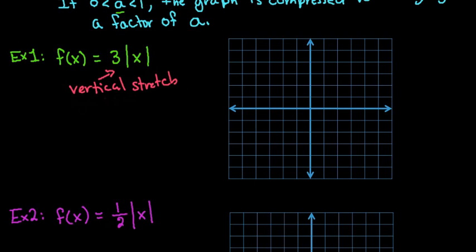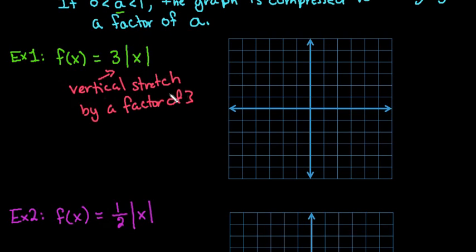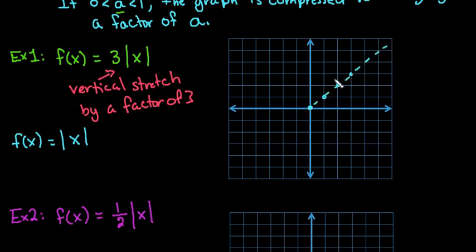This is going to be a stretch by a factor of 3, so our output is essentially going to be multiplied by 3. Remember, our parent function is just the absolute value of x, and it goes through (0,0), (1,1), (2,2), (3,3), and so on. This is what our parent function looks like.